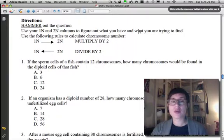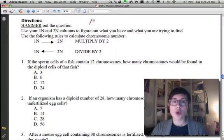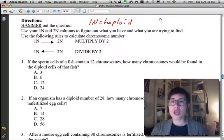Alright, let's look at the directions for hammering out the question. Now, in this case, we're always going to be moving from a 1N number to a 2N number. Let's just review some vocabulary. 1N means the same thing as haploid, so it's half the number of chromosomes that you should have. 2N means diploid, which means twice the number.